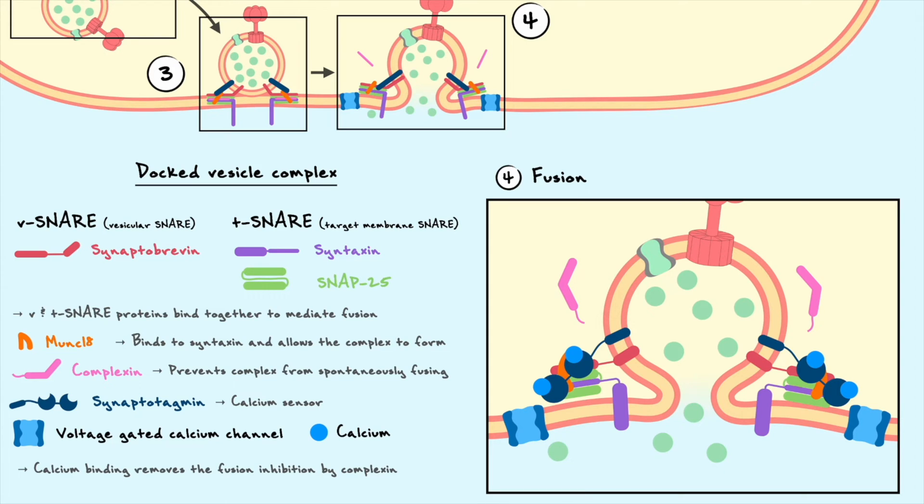After fusion and transmitter release, calcium will unbind from synaptotagmin and its activity will be terminated by either directly leaving the cell through transporters or by getting buffered by specialized proteins. The calcium entry will also be removed by the repolarization of the cell by voltage-gated potassium channels.